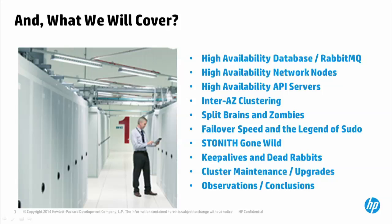Today's talk has a strong Neutron focus, and will also cover how we HA the Neutron database and RabbitMQ. We'll talk about the network nodes, the API servers, and then get into some of the issues we've come across running this at scale in production — particularly around inter-AZ clustering, split-brain, failover speed, stonith, keep-alives, cluster maintenance, and conclusions.